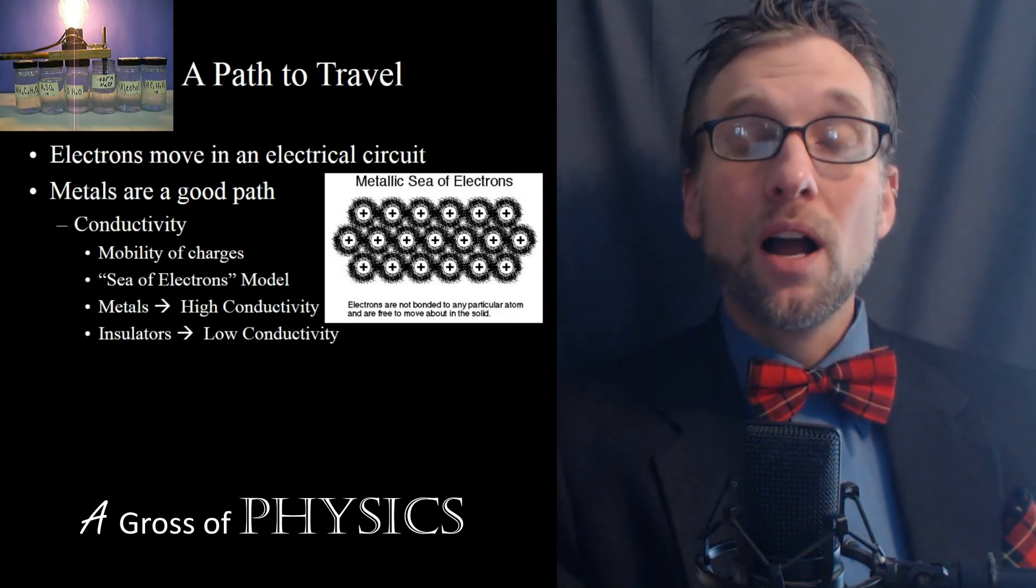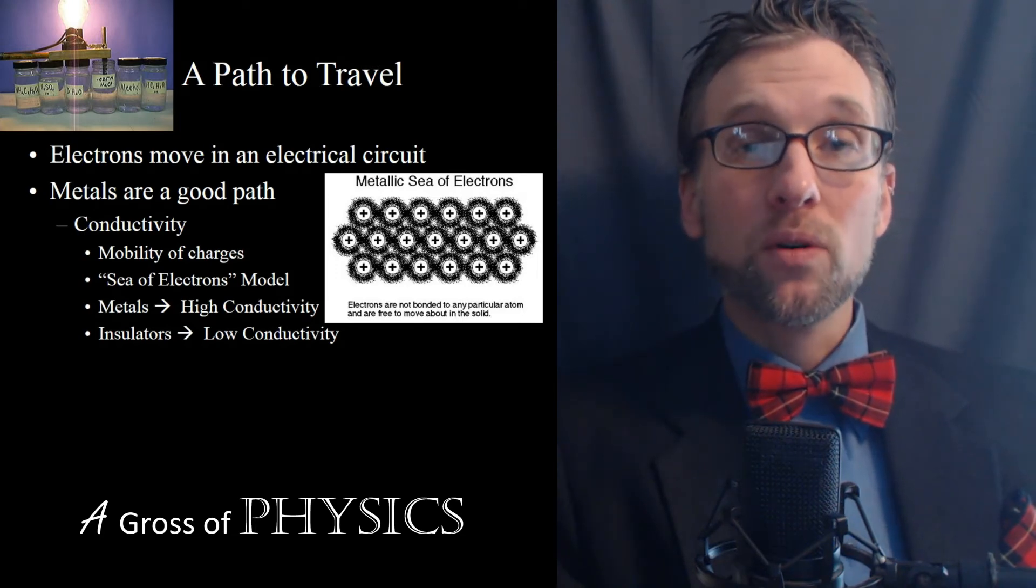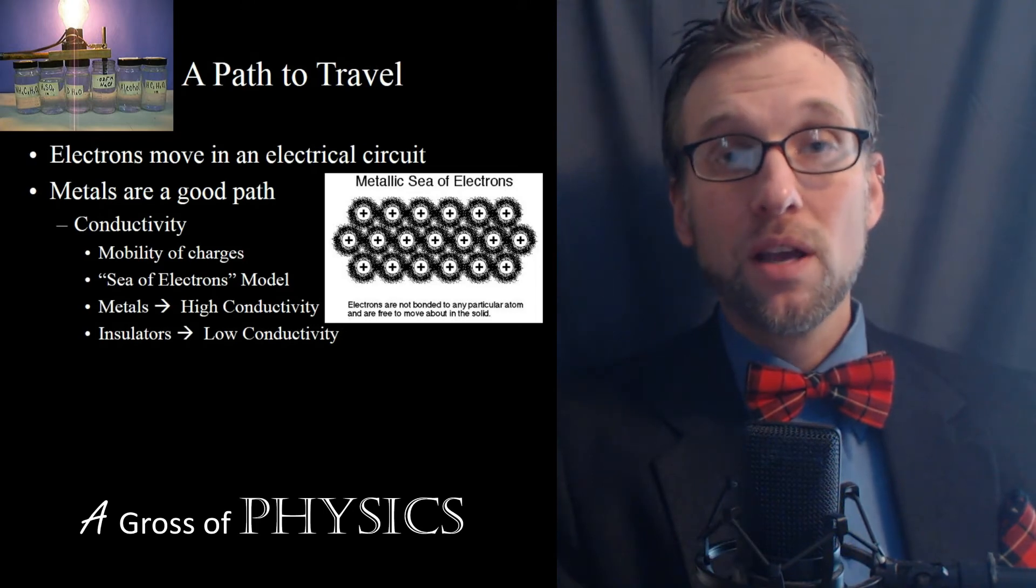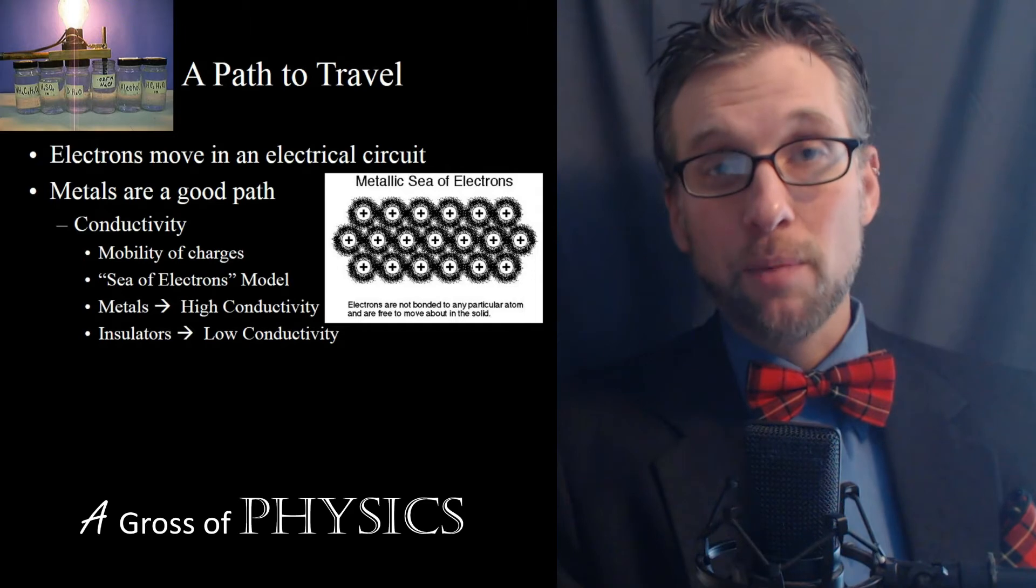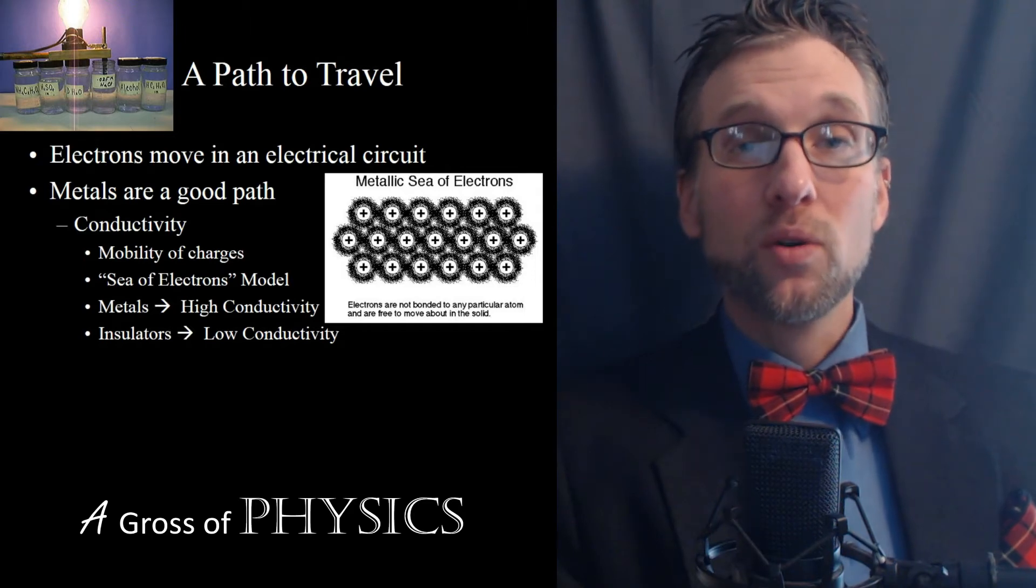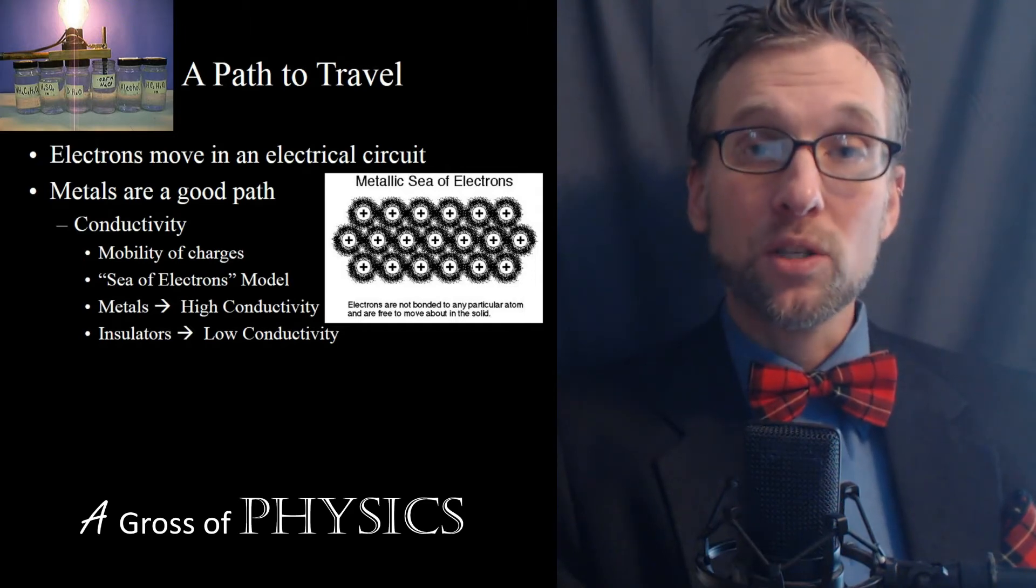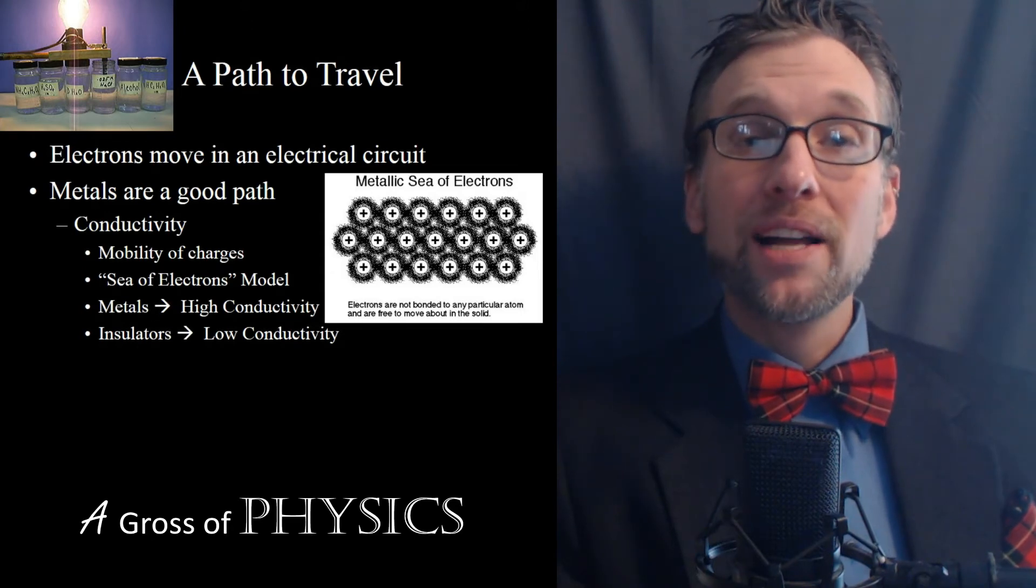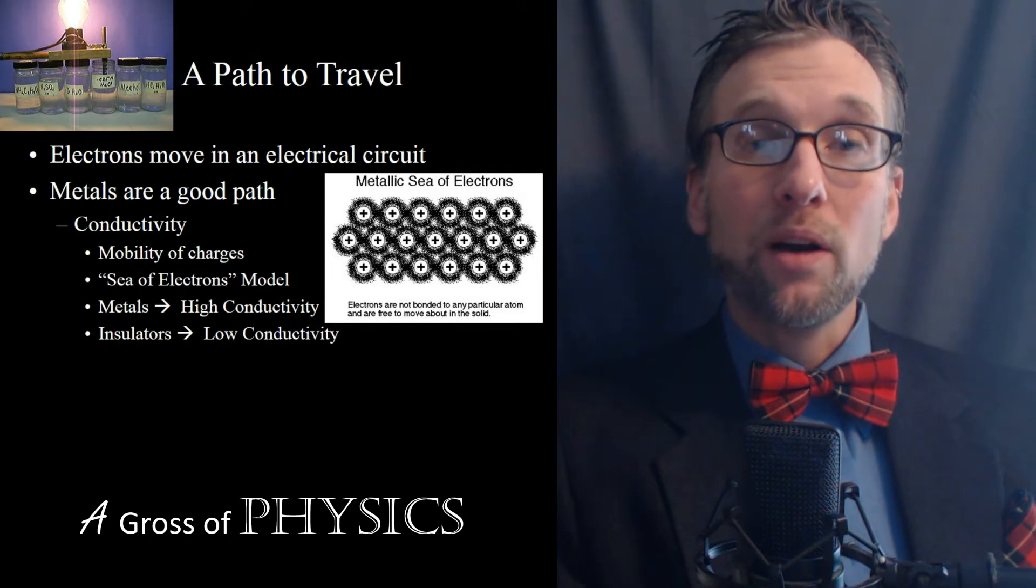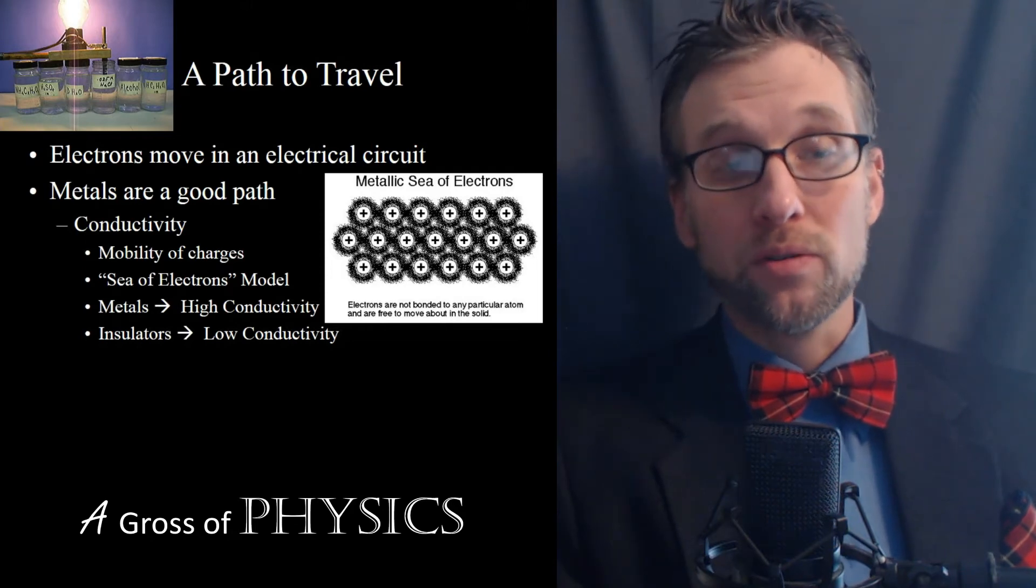We typically use wire that is made of copper in our electrical lines in our house because it's abundant and it's fairly inexpensive. Now the price of copper has continually increased, so it's not as cheap as it once was, but it's cheaper than some of the alternatives. And it provides good conductivity to allow electricity to flow in your house.